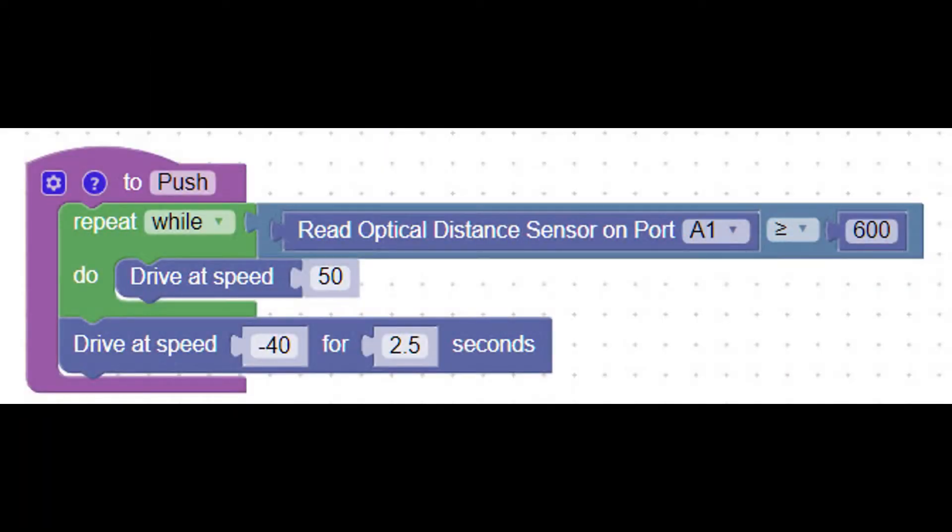Let us look at the content of the push subroutine or function. First of all, we have a repeat function, and it will repeat while it reads an optical distance sensor on port A1. And the reading is greater than or equal to 600. That will mean it's over the white portion of the swimming pool, and it will continue to drive at speed 50. However, when the reading drops to below 600, we know we've reached the edge of the swimming pool, and it stops driving forward. And we drive backward to roughly the middle of the swimming pool.